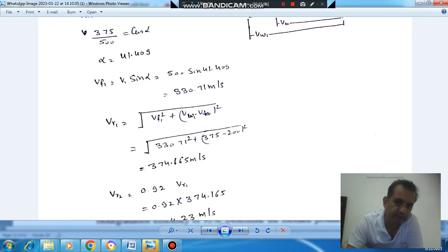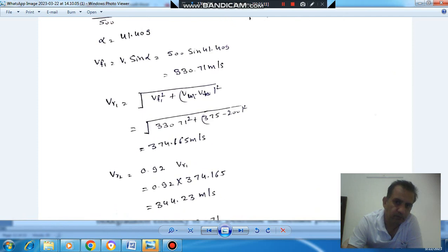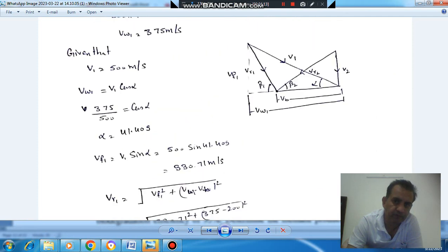So VR2 will be 0.92 times VR1, that is 434.23 m per second. So now we have VF1, we have VW1 minus blade velocity.